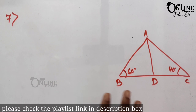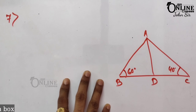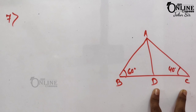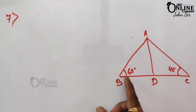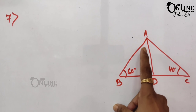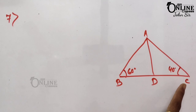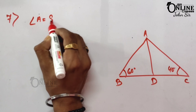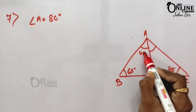In sum number 7, in the adjoining figure, AD bisects angle A. We need to arrange AB, BD, and DC in the descending order of their length. Here, angle B = 60°, angle C = 40°, so the remaining angle A = 80°, because the sum of three angles equals 180°. Since AD is the bisector of angle A, the two parts are each 40°.